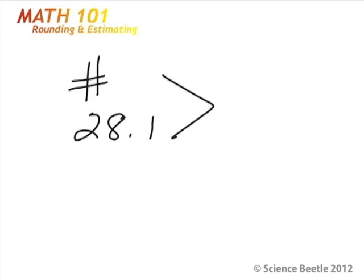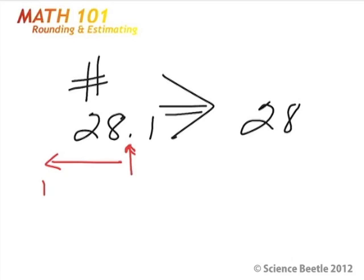Essentially one way that we could do this is take this number and write it more like 28, because we're rounding to the nearest whole number. Remember from a previous lesson when we were talking about number place values, we talked about the place value being guided by the decimal point. Numbers to the left are going to be whole numbers, and numbers to the right of the decimal point are going to be fractions. So what we're really trying to do is eliminate the fraction part of the number and round it up to the nearest whole number.